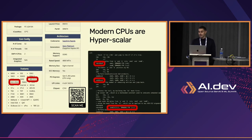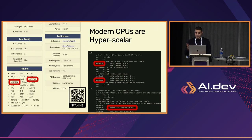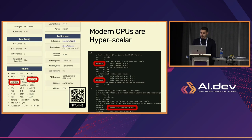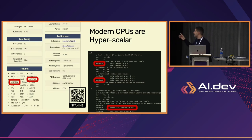Modern CPUs have very special tailored instructions that allow us to implement search at a very large scale. On the right side, you see a snippet from one of my blog posts — one of six I wrote in the last two months — on how search can be optimized. This is annotated assembly, not pure assembly, so you can see my comments in it.